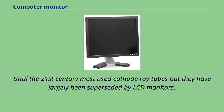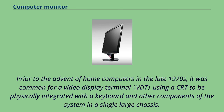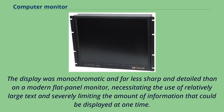Until the 21st century most used cathode ray tubes, but they have largely been superseded by LCD monitors. The first computer monitors used cathode ray tubes. Prior to the advent of home computers in the late 1970s, it was common for a video display terminal using a CRT to be physically integrated with a keyboard and other components of the system in a single large chassis. The display was monochromatic and far less sharp and detailed than on a modern flat panel monitor, necessitating the use of relatively large text and severely limiting the amount of information that could be displayed at one time.